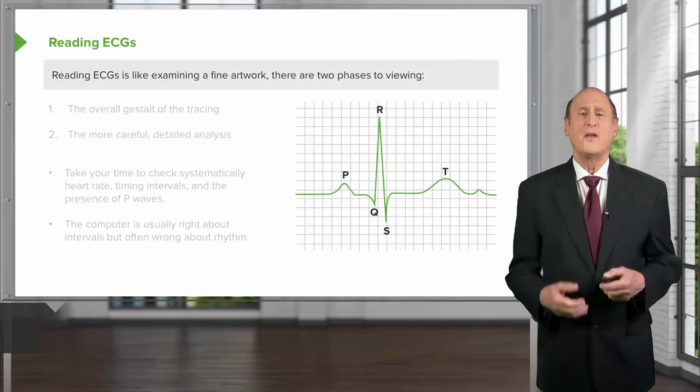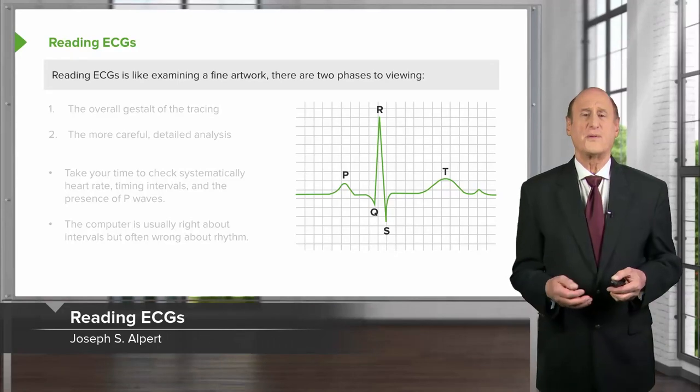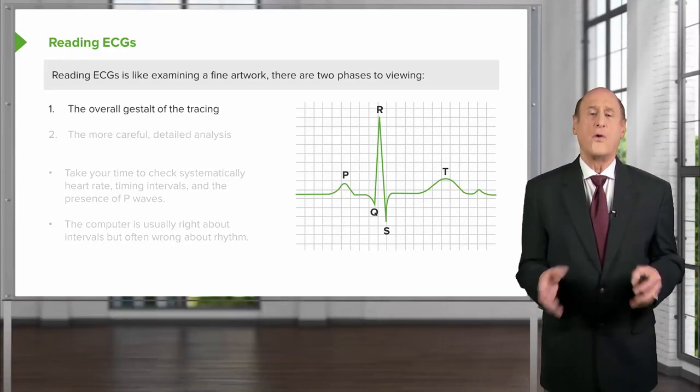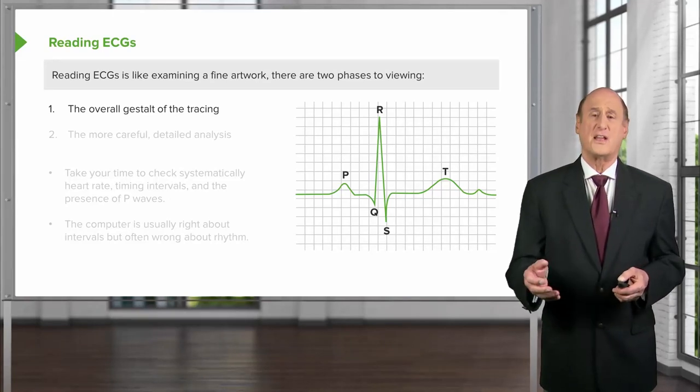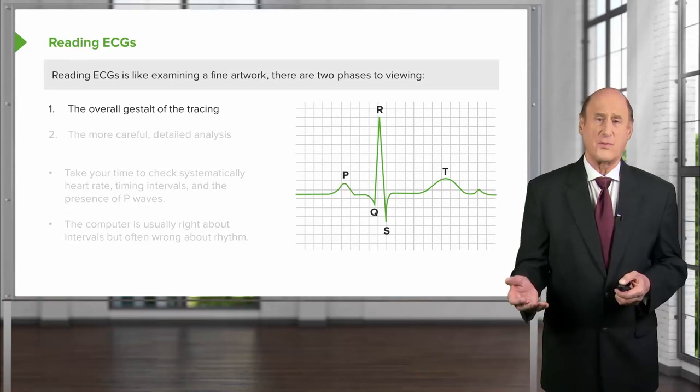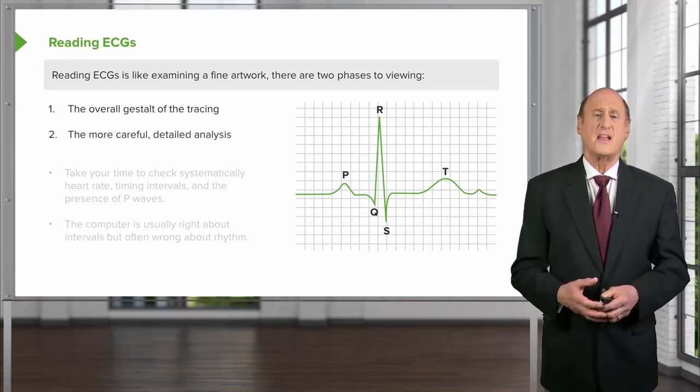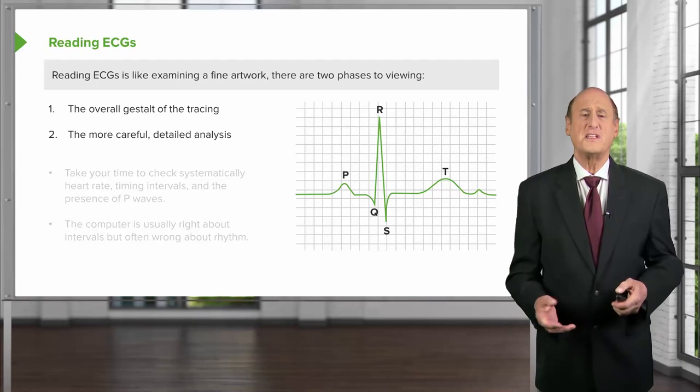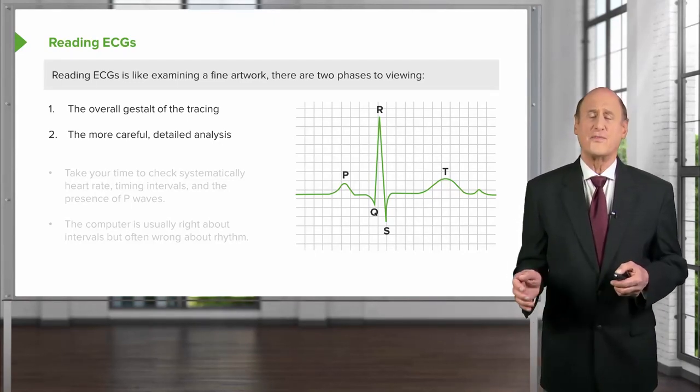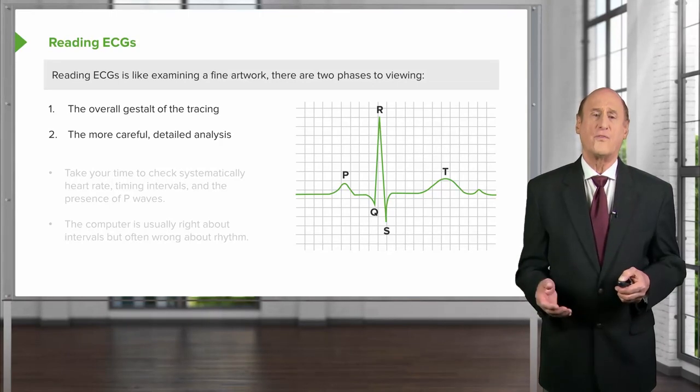So reading the electrocardiogram, as I said, is like examining a fine artwork. First of all you get an overall impression—something leaps out at you, particularly if it's acute heart attack or acute myocardial infarction as we'll talk about. But then secondly there has to be the more careful detailed analysis: things like heart rate and the duration of the various intervals, and we're going to go over that now.